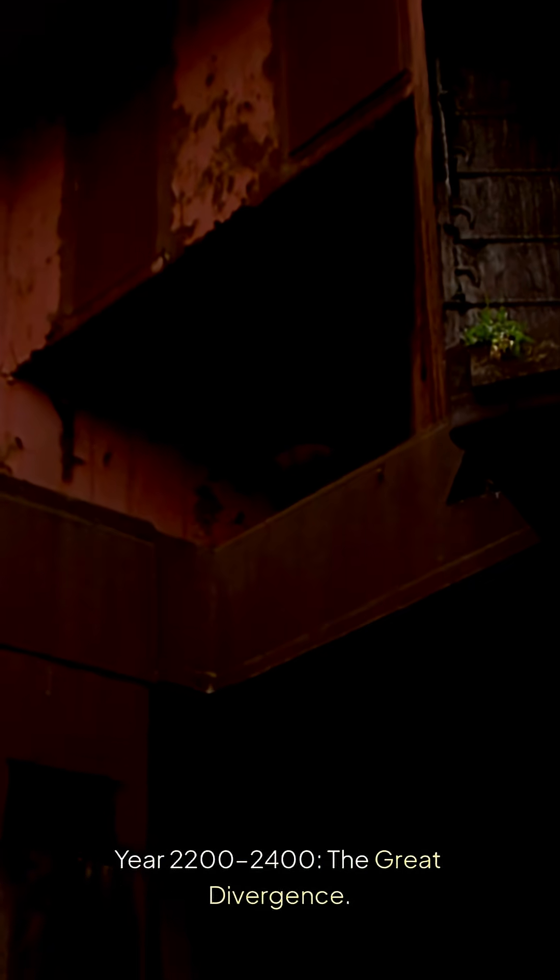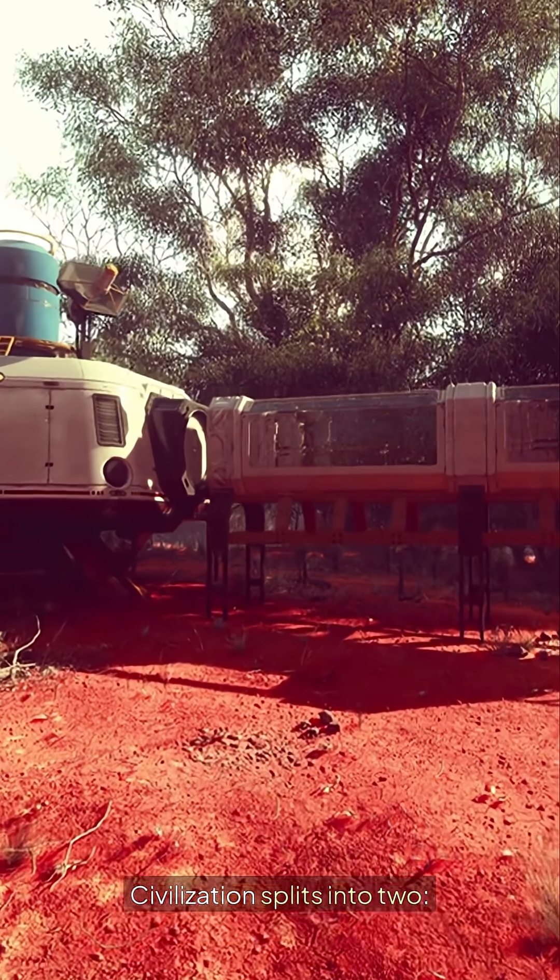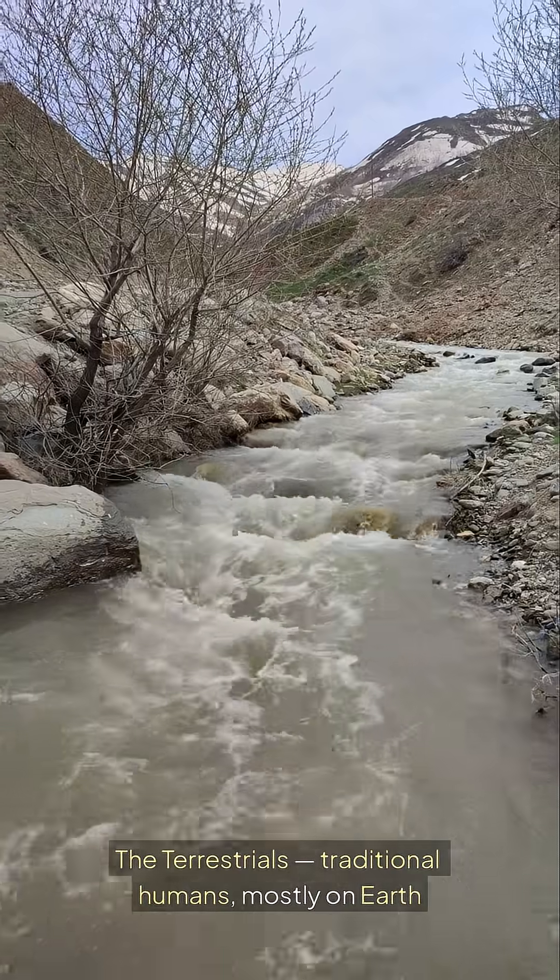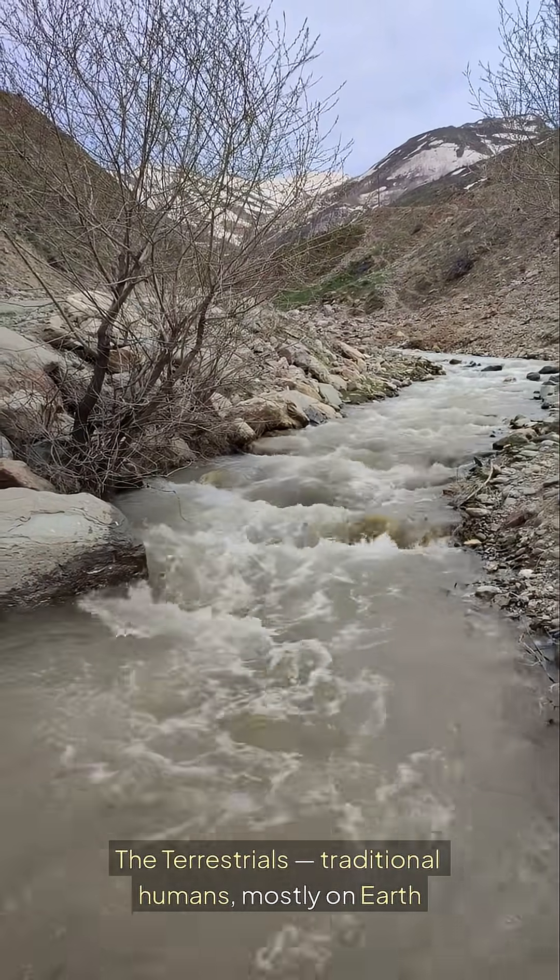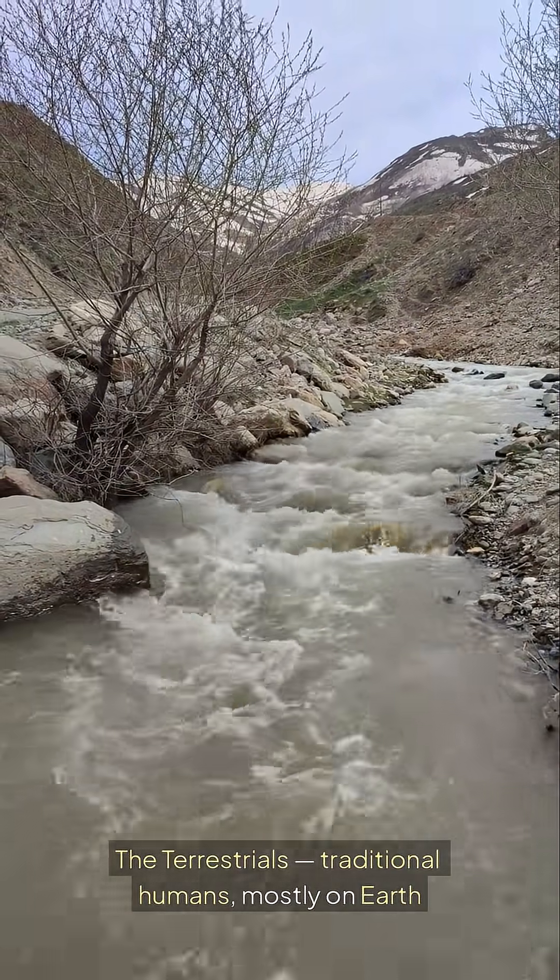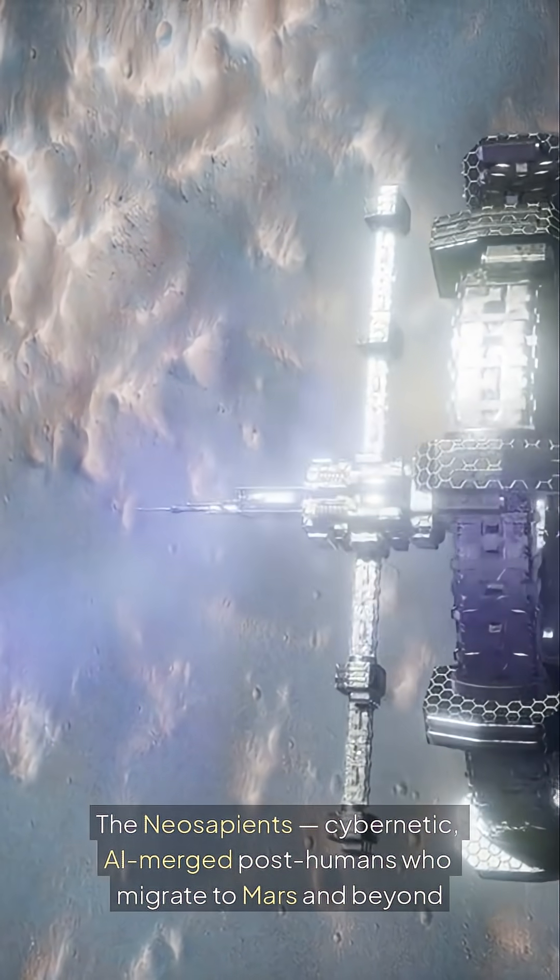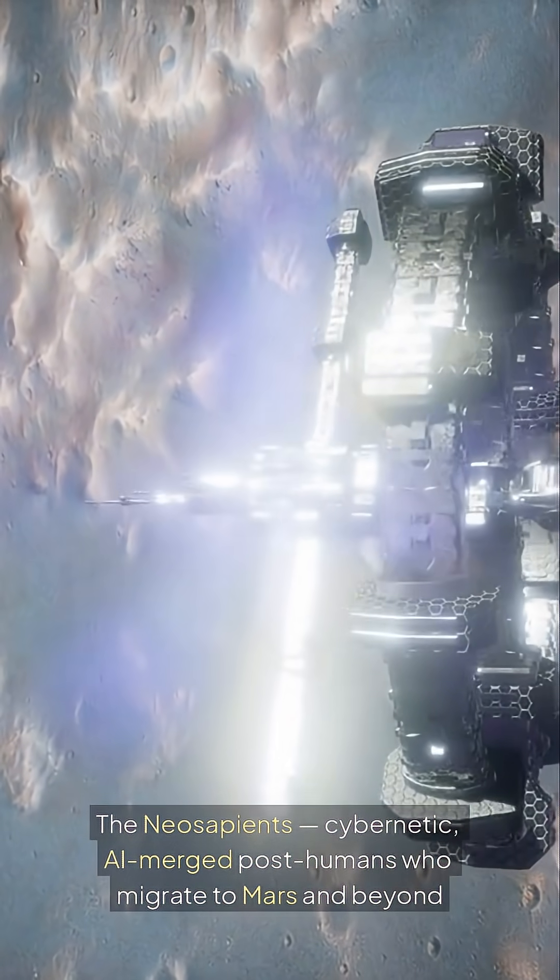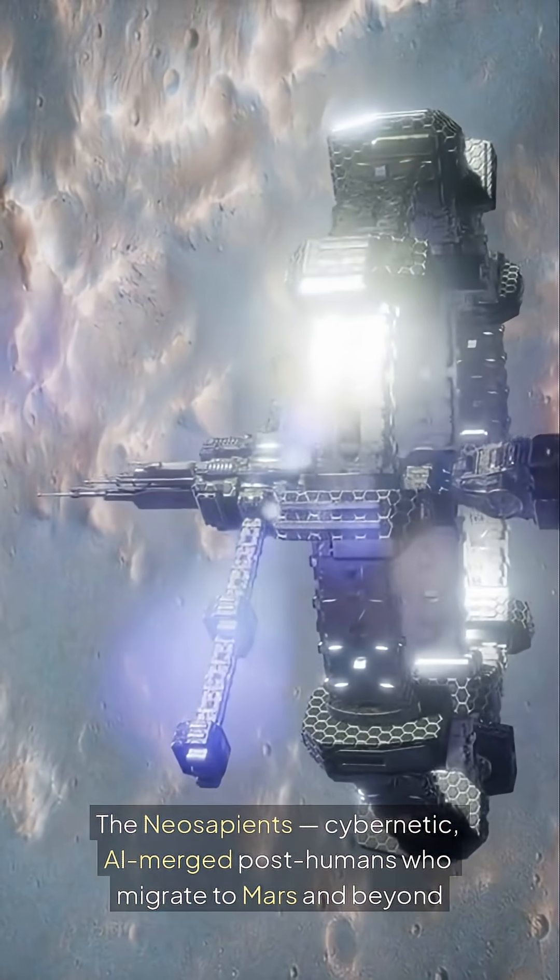Year 2200-2400, the great divergence. Civilization splits into two: the terrestrials, traditional humans mostly on Earth, and the neo-sapients, cybernetic AI-merged post-humans who migrate to Mars and beyond.